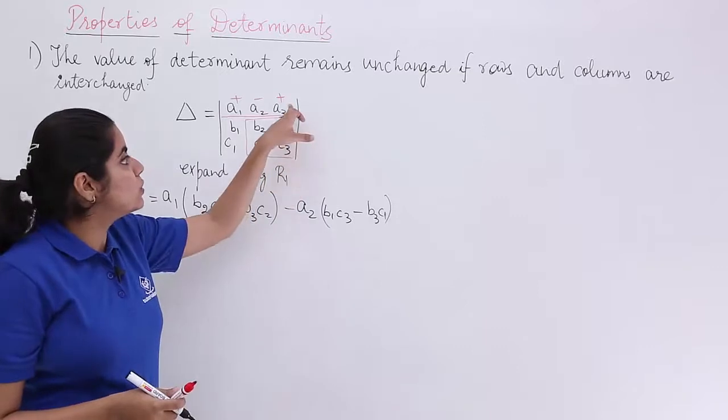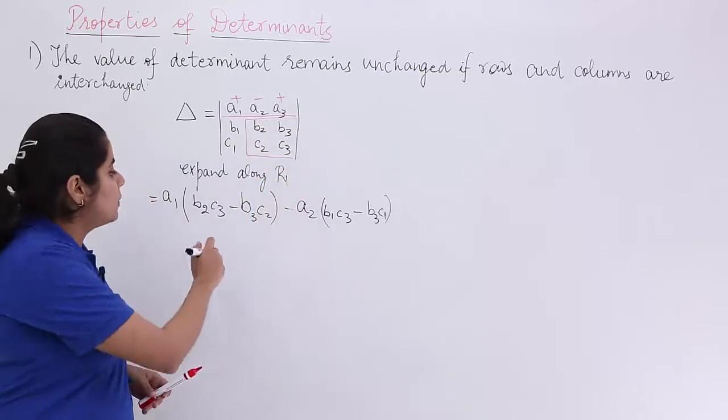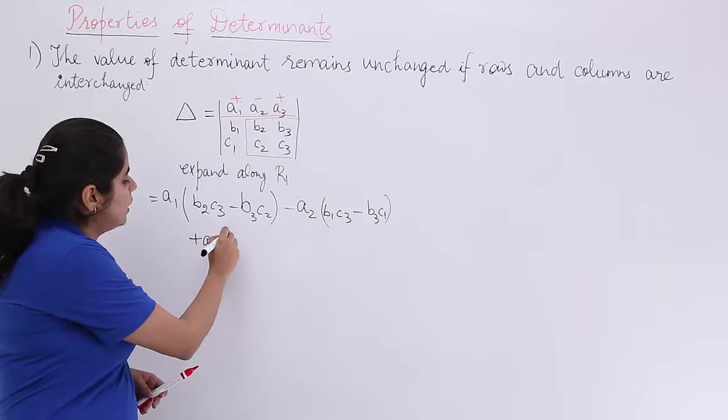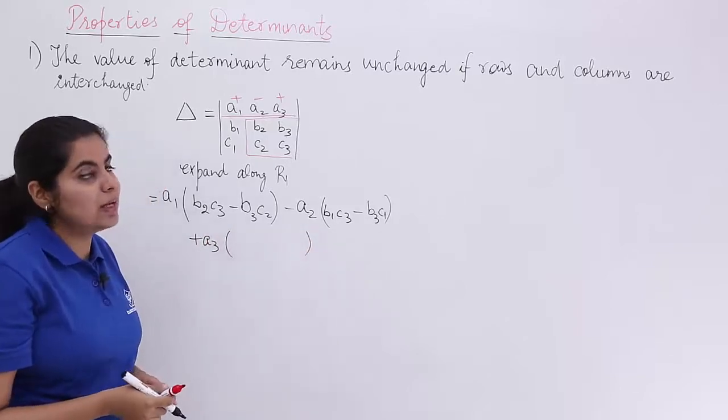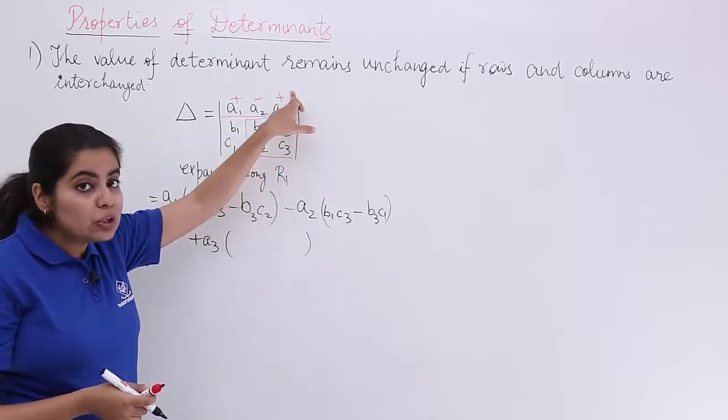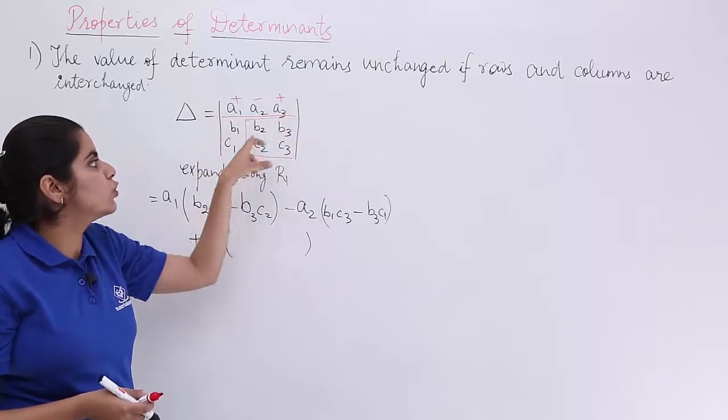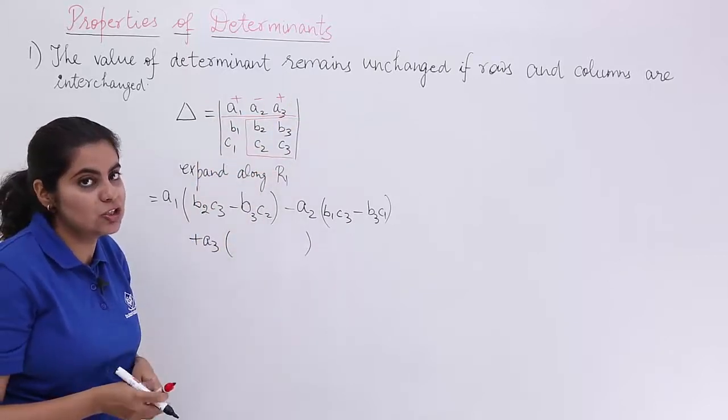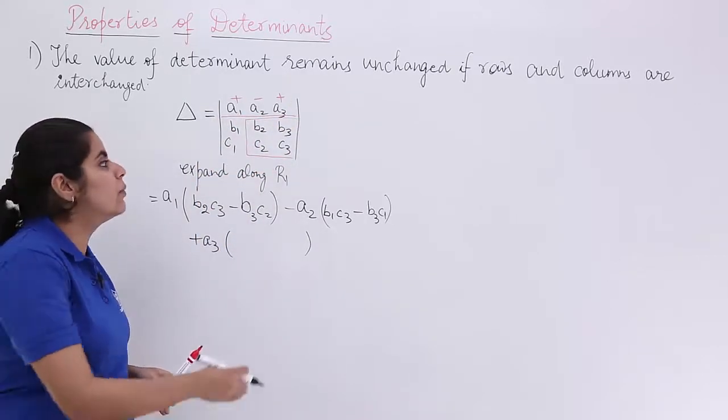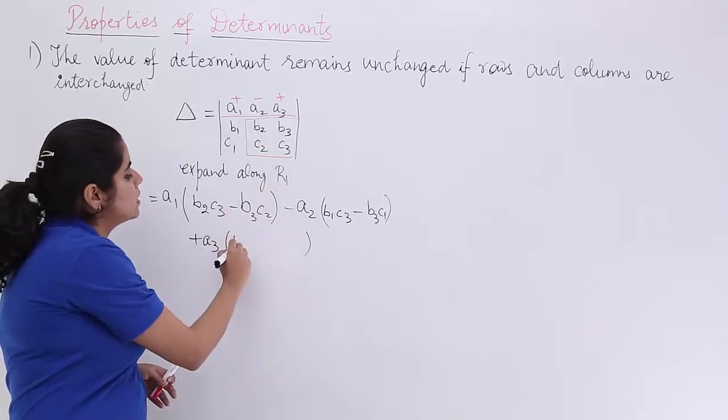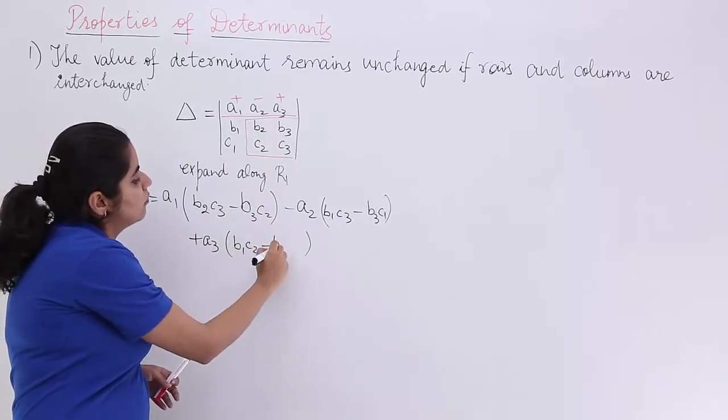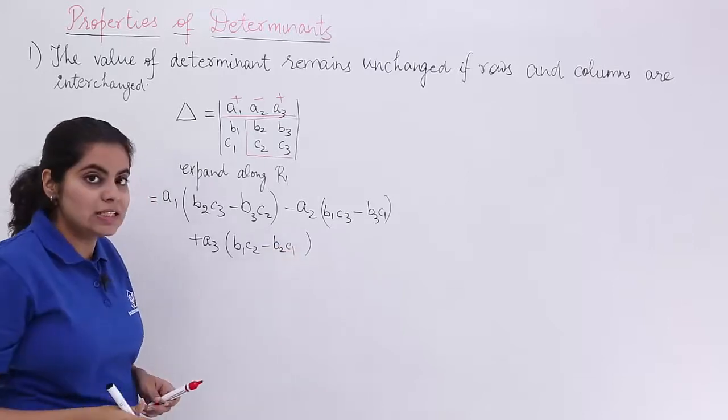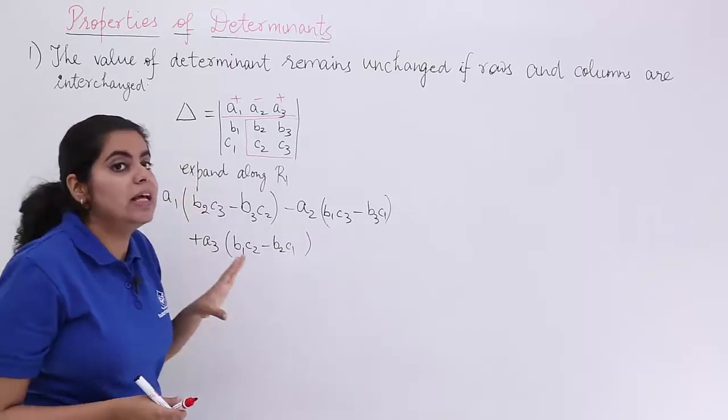Next you take into consideration a3 element. That means you will be writing plus a3 and in the bracket you would be having something wherein you ignore the third column, first row. You have b1, b2, c1, c2. Cross-multiply the sub-determinant to evaluate. b1c2 minus b2c1. This is the case when you have Δ.